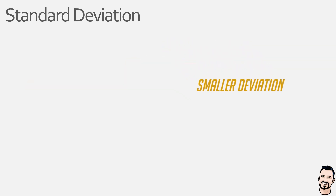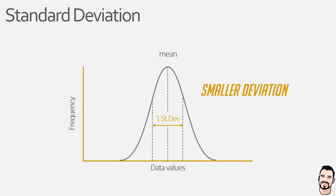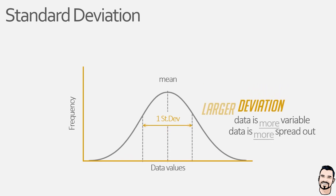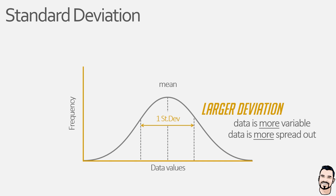Here we can see the graph for a standard deviation that is relatively small. This means the data is less variable and less spread out — basically many of the data values are similar and close to the mean. However, if we compare this data set to one with a larger deviation, we can see the bell-shaped curve is wider with a reduced peak, meaning the data is more variable and more spread out — basically the data values differ from the mean value a lot more.